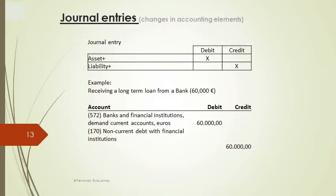Because of the double-entry bookkeeping method, when we recognize or debit an asset, at the same time either we must recognize or credit another asset, or we must recognize or credit a liability, equity, income, or other equity account.